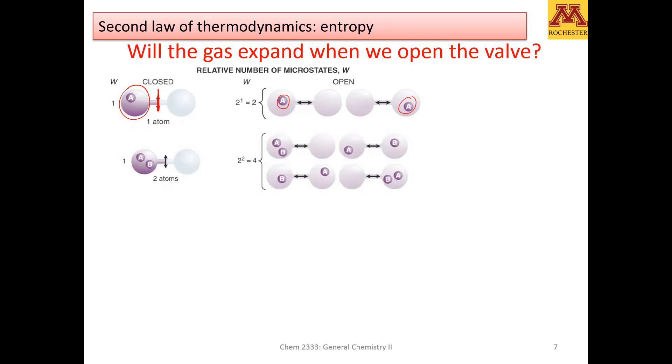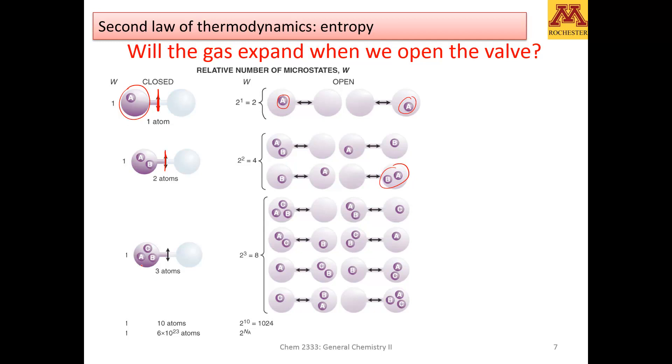Now let's say that I have two atoms, and if I remove the barrier, now I have up to four possible combinations. If I have three, I have one combination when the wall is closed versus eight possible combinations.